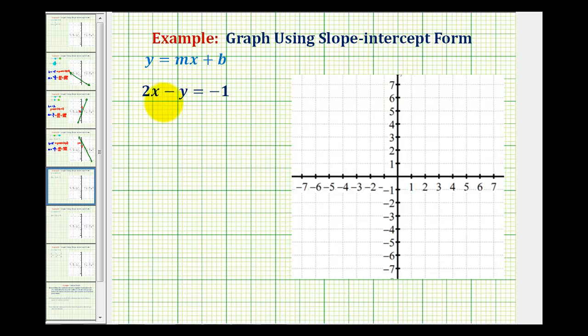We want to graph the linear equation 2x minus y equals negative 1 using the slope-intercept form of a line, which is y equals mx plus b. So if we have the equation of the line in this form, then b will be the y-intercept and m will be the slope.